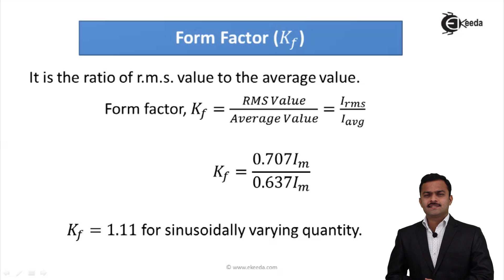Hello friends, in this video we are going to see two factors associated with AC quantity: form factor and peak factor. We have seen the average value, RMS value, and maximum value of AC quantity. What if we can establish the relationship between them? The first factor is form factor.